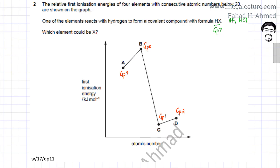Before group 0 or group 8, it's group 7. The formula of the compound is HX. It could also be group 1, but since he's talking about a covalent compound, only group 7 non-metals form covalent compounds. The correct answer for this question is option A.